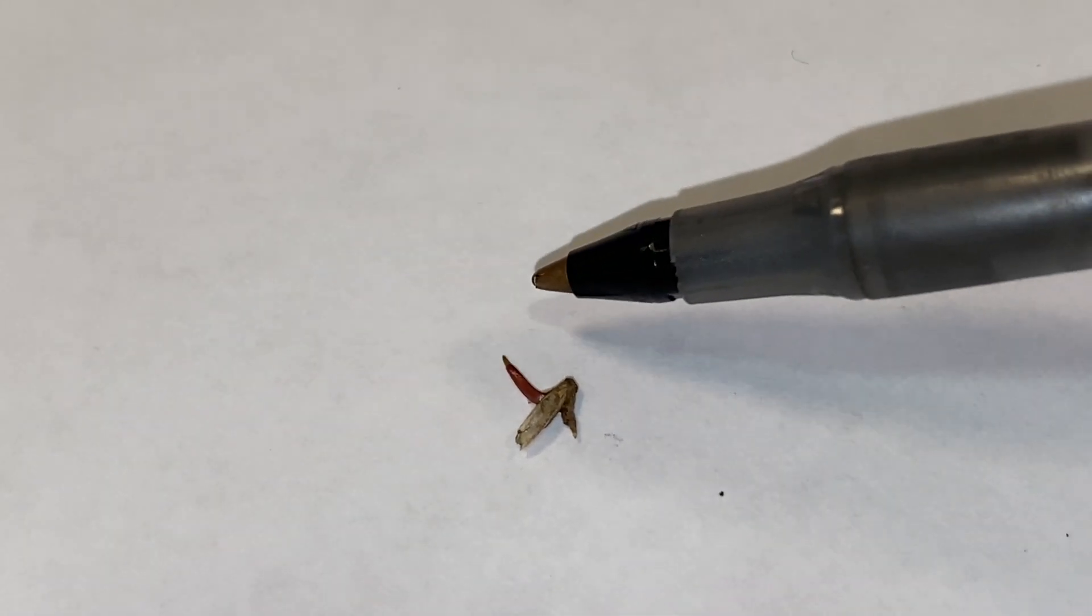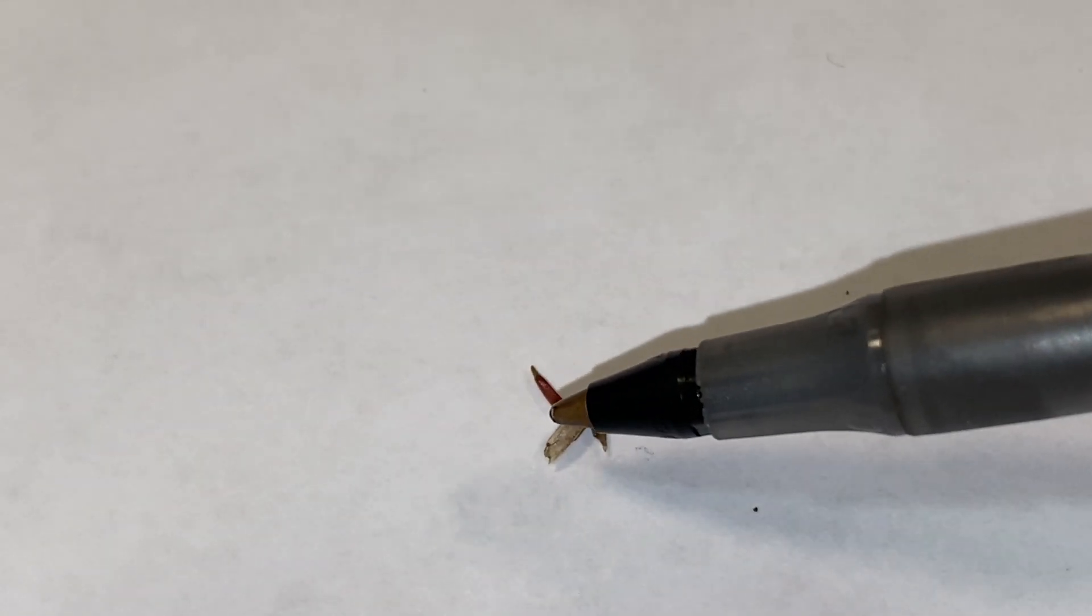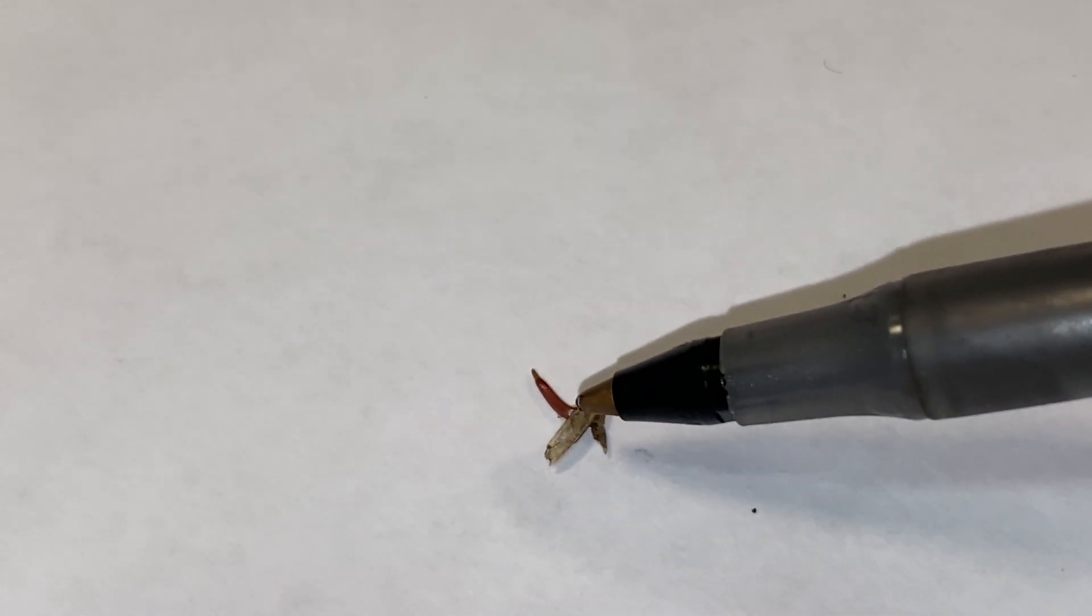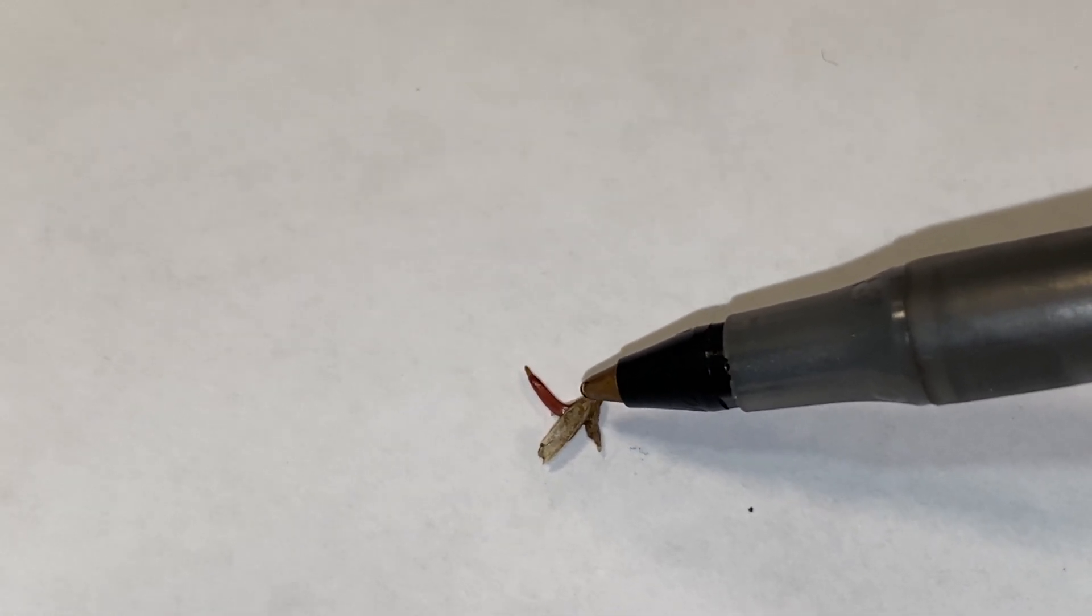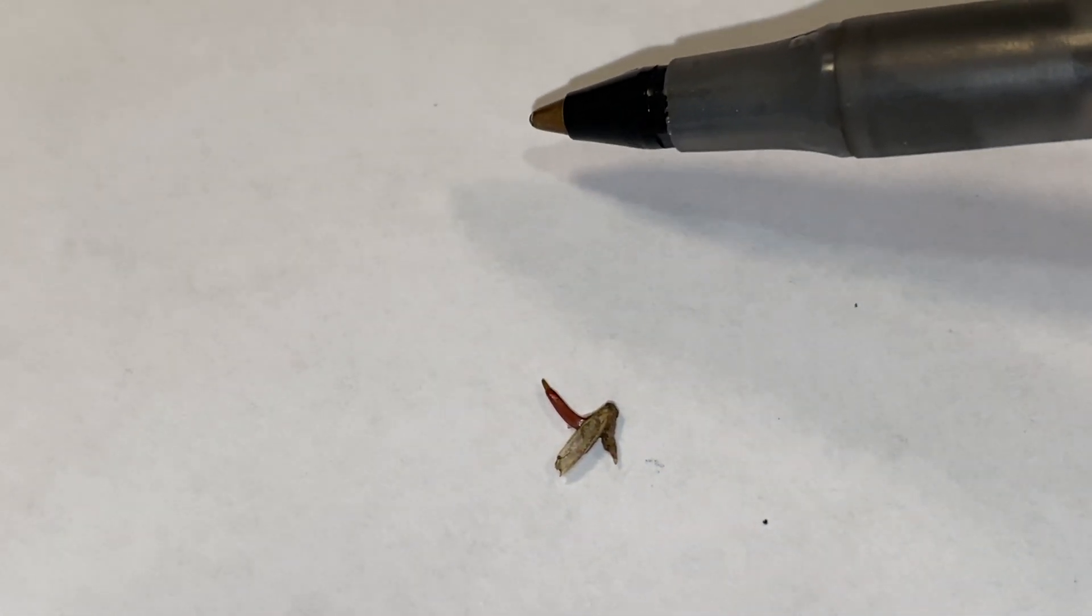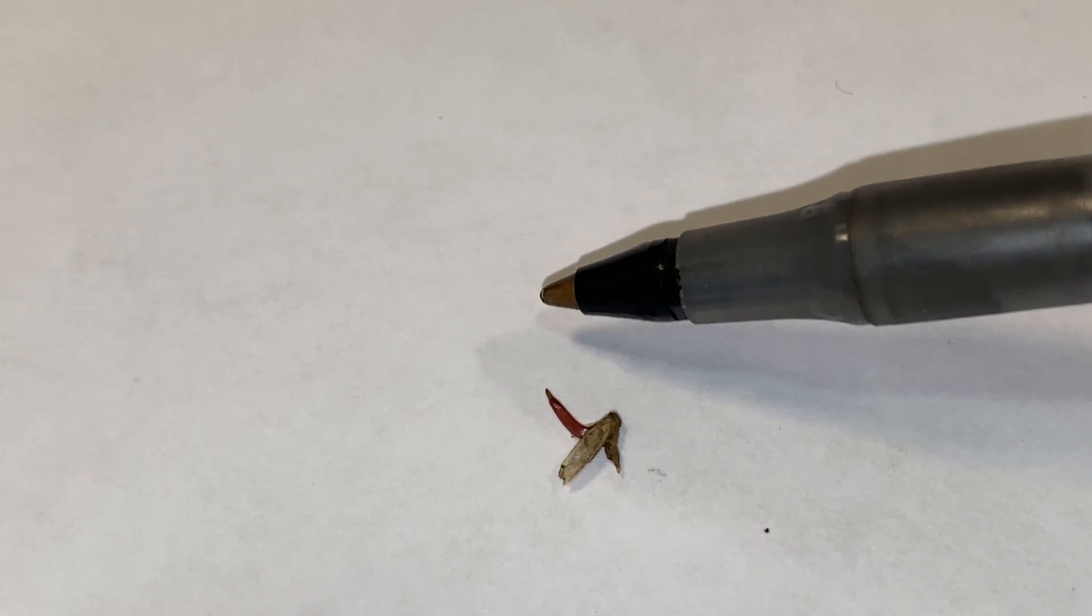So pre-emergent means not necessarily before the plant emerges from the seed. But it's really more about before the weed can emerge from the turf grass where you can actually see it.